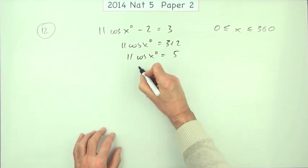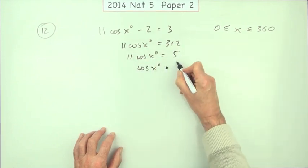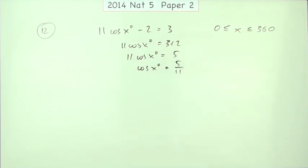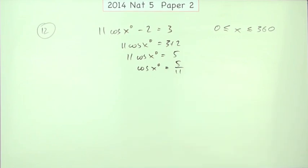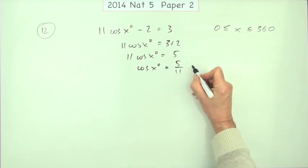There's a multiplying 11 which you could have done in one go. So that's going to be 5 divided by 11. Get rid of the 2, add it, get rid of the 11, divide by it. That's the first mark.